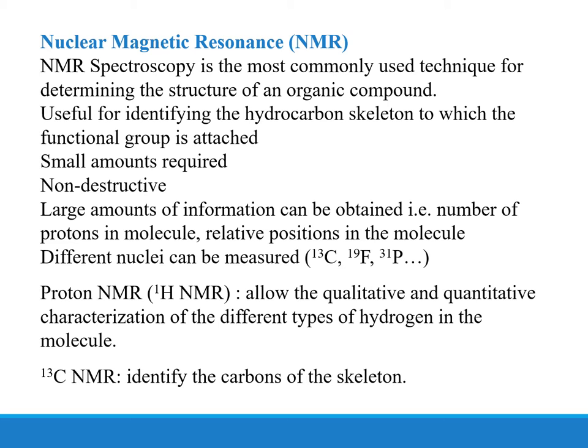NMR requires only a small amount of sample, it's non-destructive, and large amounts of information can be obtained, like the number of protons in the molecule, their relative positions, and different nuclei can also be measured, like carbon, fluorine, and phosphorus. Proton NMR allows qualitative and quantitative characterization of the different types of hydrogens in the molecule, while carbon NMR identifies the carbons of the skeleton.